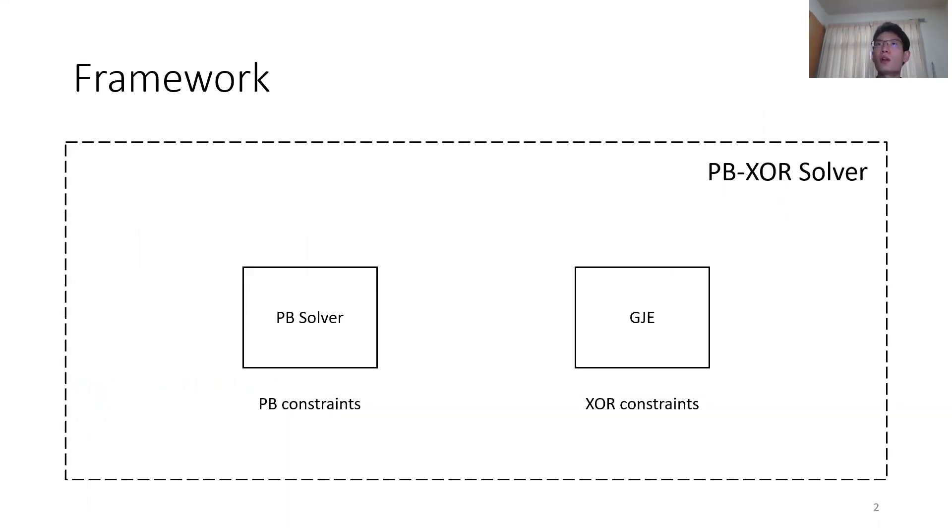As shown in the framework, a PB-XOR solver is composed of two components. We use a PB solver to handle PB constraints. We are using Gaussian elimination or GJE in-short to handle the XOR constraints.